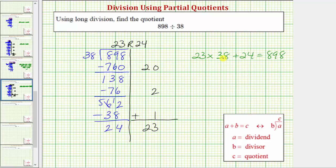23 times 38 equals 874. 874 plus 24 does equal 898. We can also say that 898 has 23 groups or copies of 38 with 24 left over or 24 remaining. I hope you found this helpful.